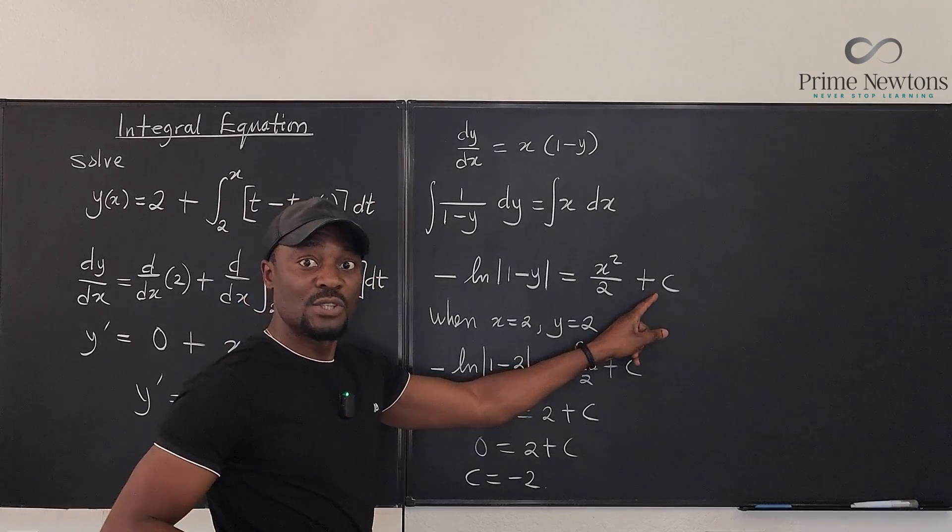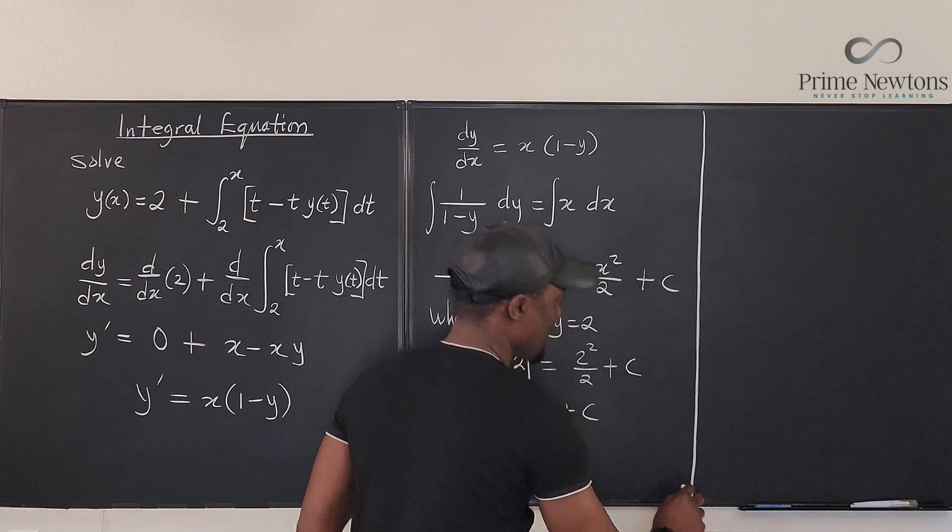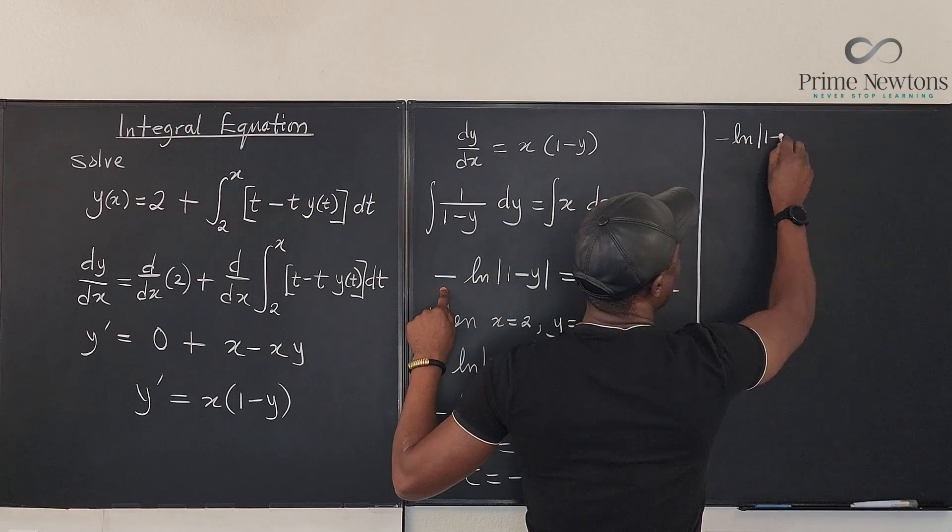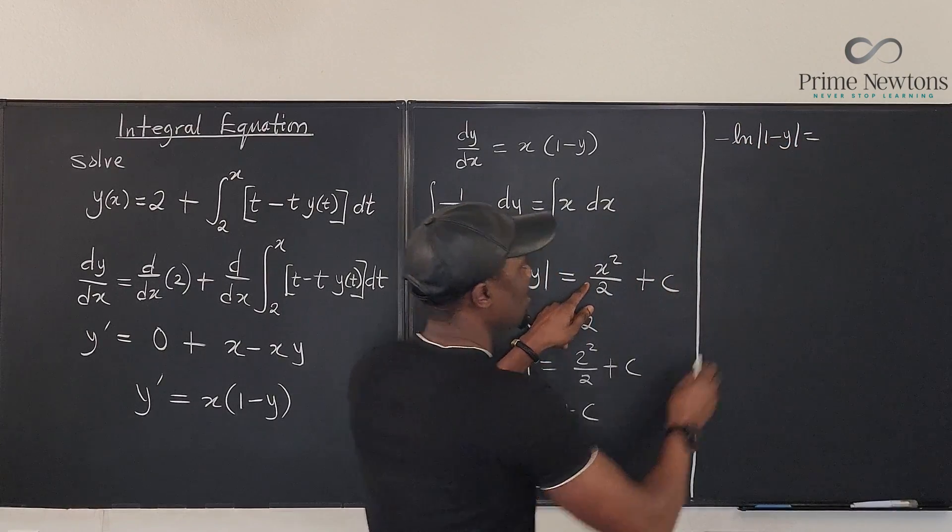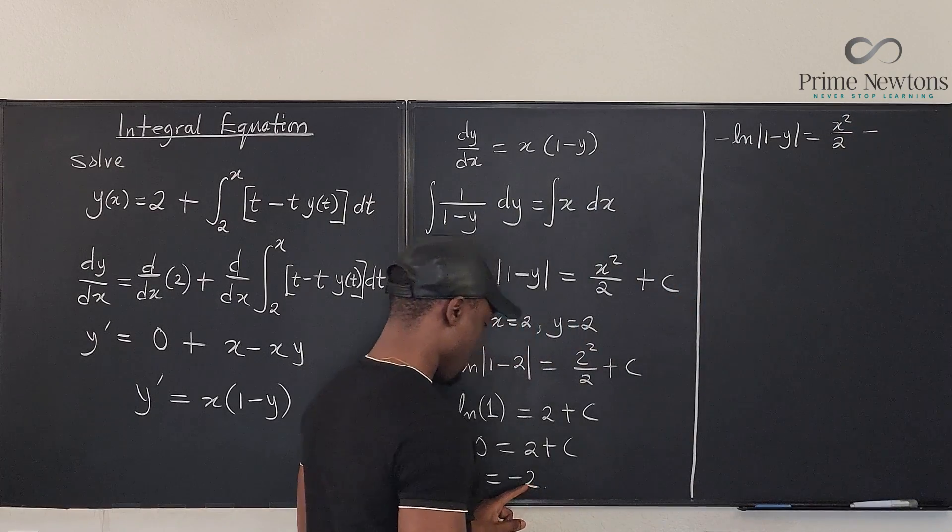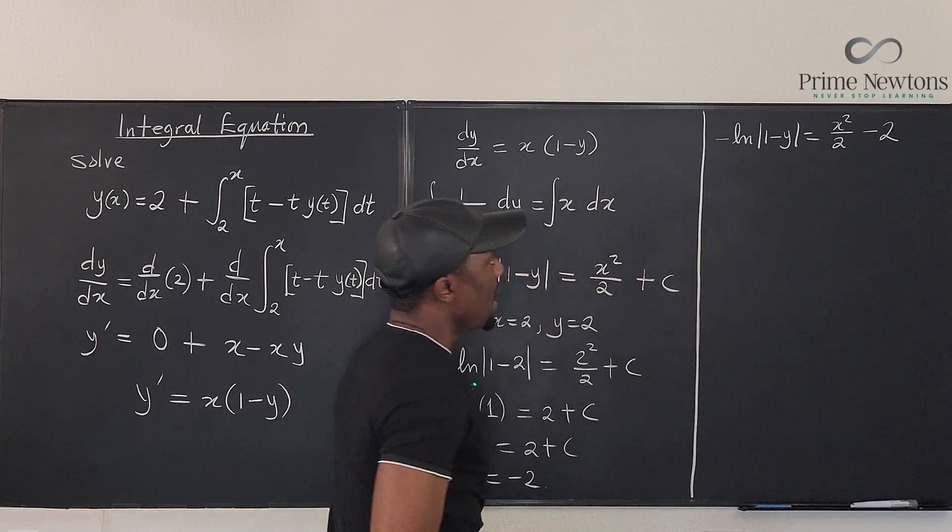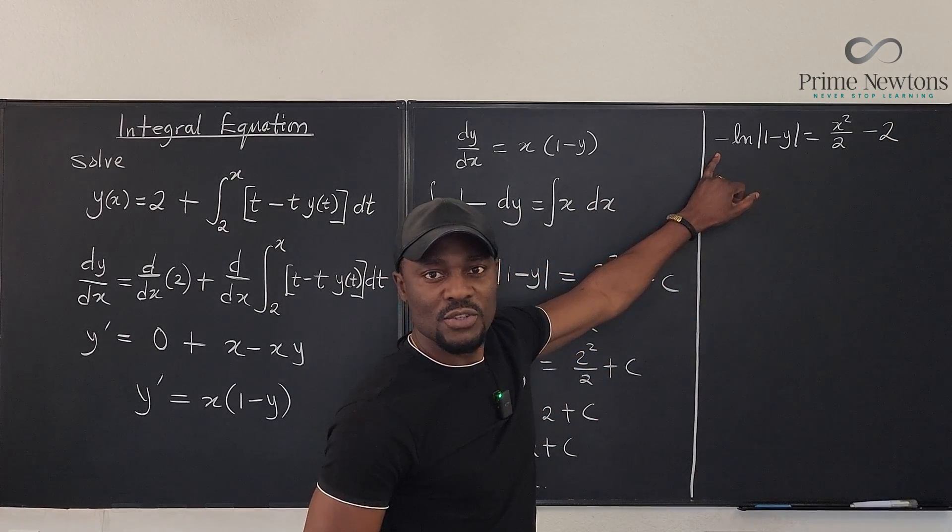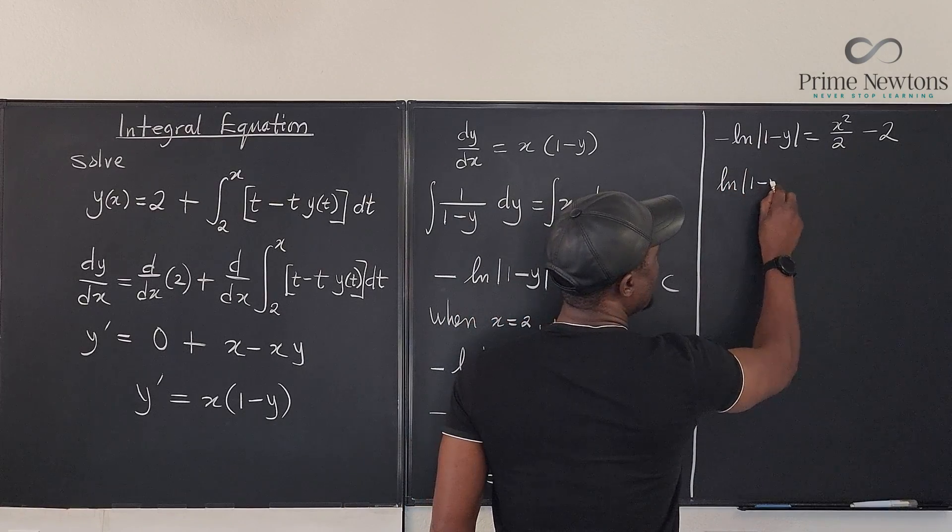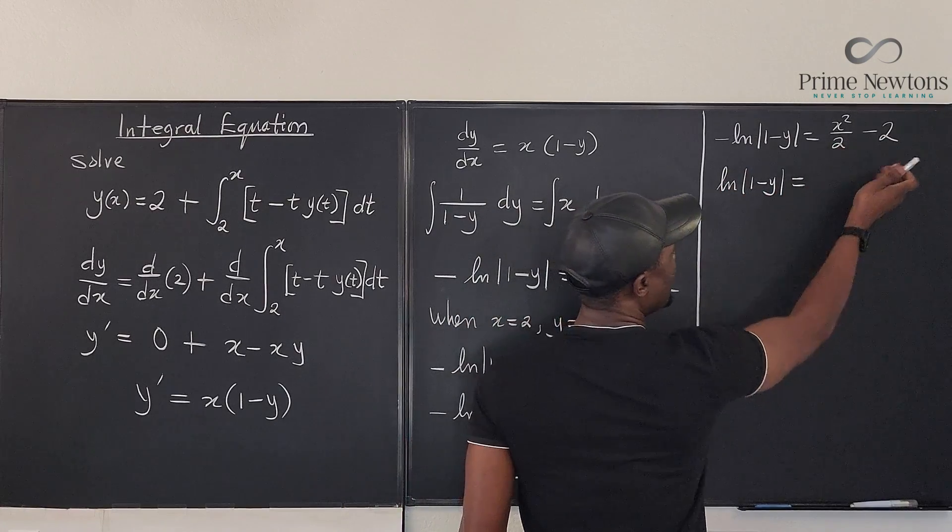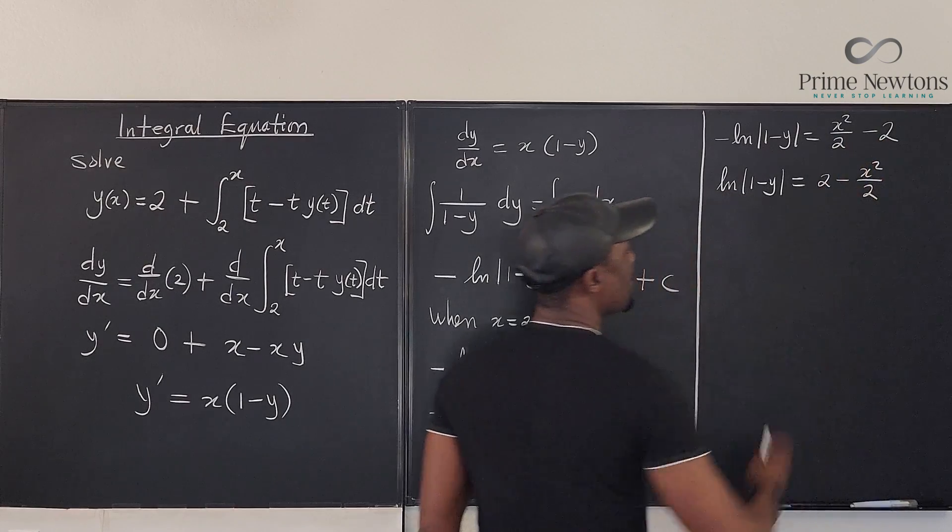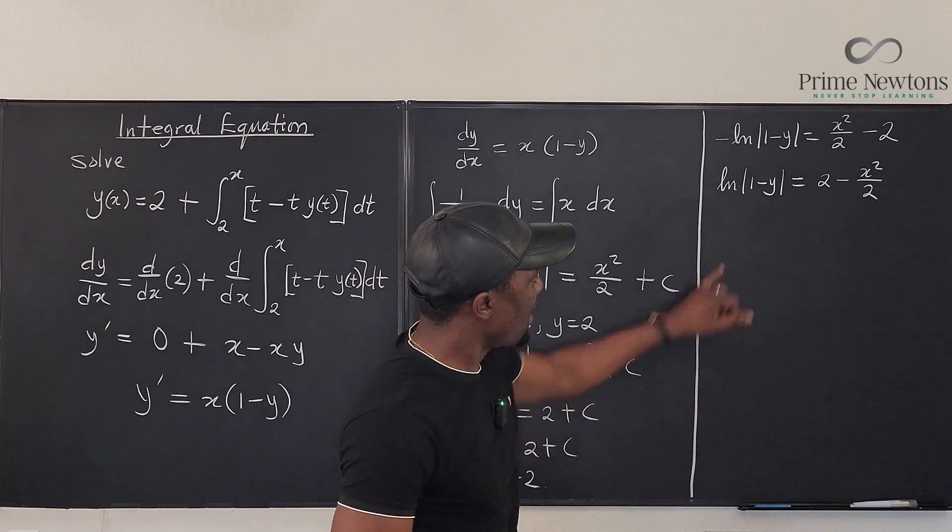Go plug in negative 2 here. So what do we have? We have negative ln of the absolute value of (1 - y) is equal to x squared over 2 minus 2. We don't like this minus 1 here. So multiply both sides by minus 1. You end up with ln of (1 - y) is equal to 2 minus x squared over 2. Let's get rid of this natural log.